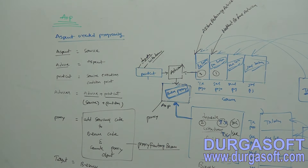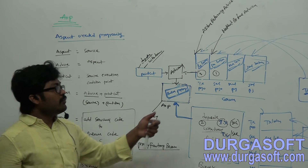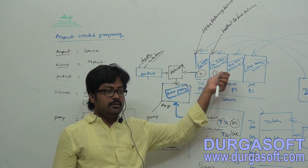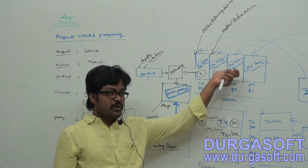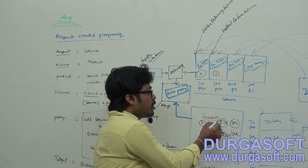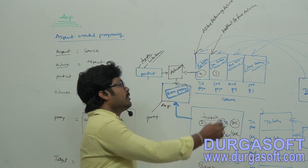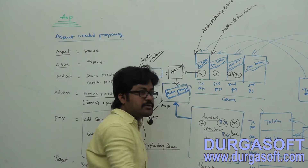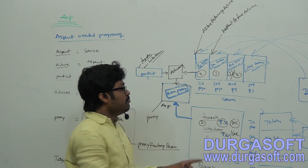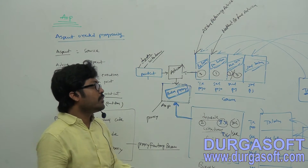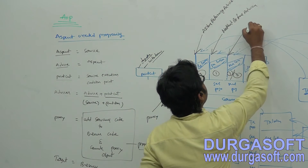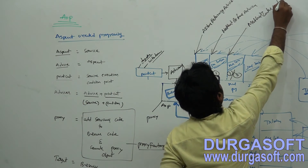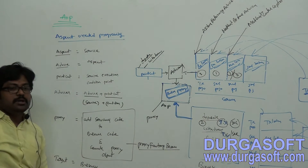In case you want to execute a service both before and after while doing deposit — for example, if you want to send a one-time password before deposit and send a success or failure mail after completion of deposit — before your business and after your business as a first and last. If you want to execute a service in two ways, before and after your business, you need to implement that class from method interceptor (around advice).